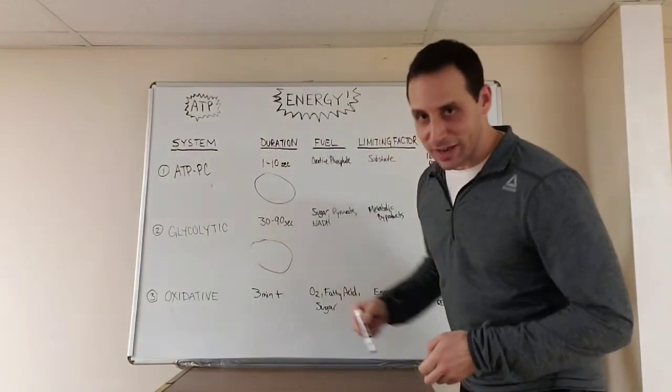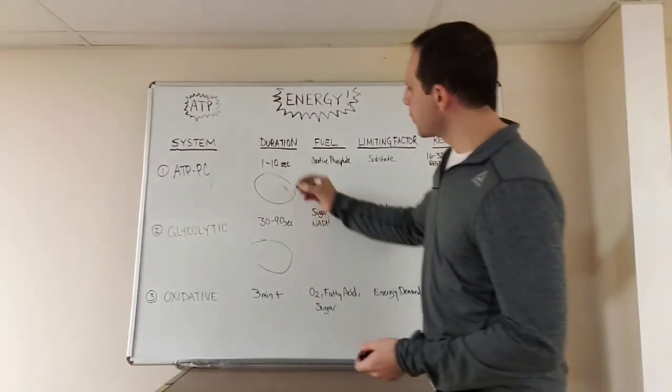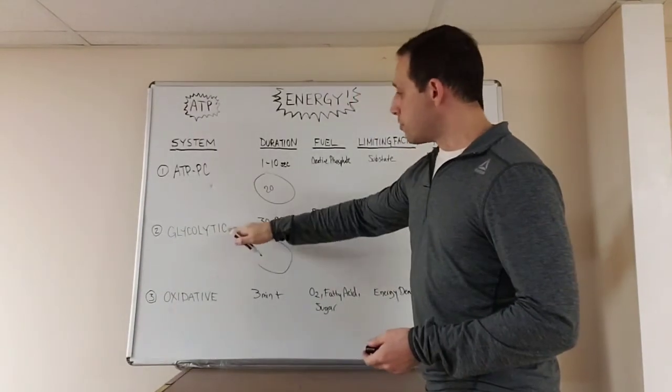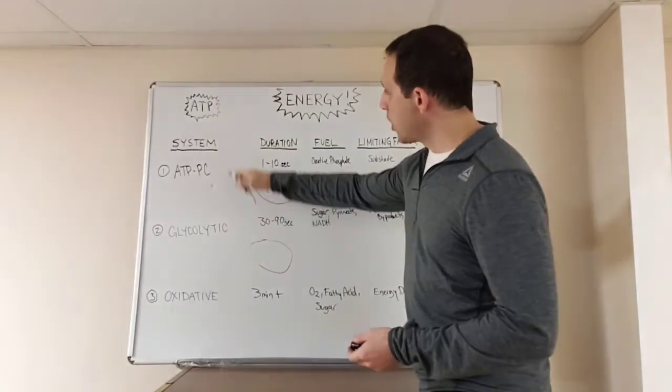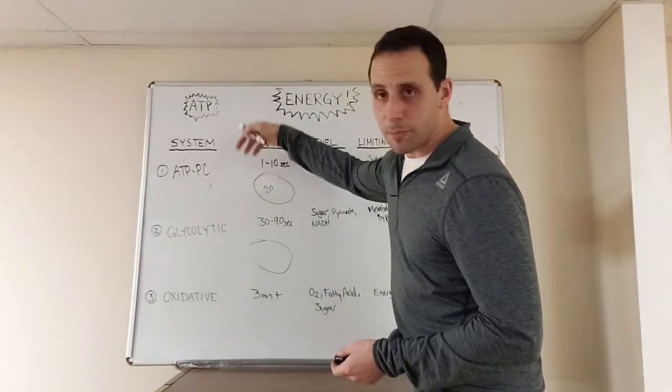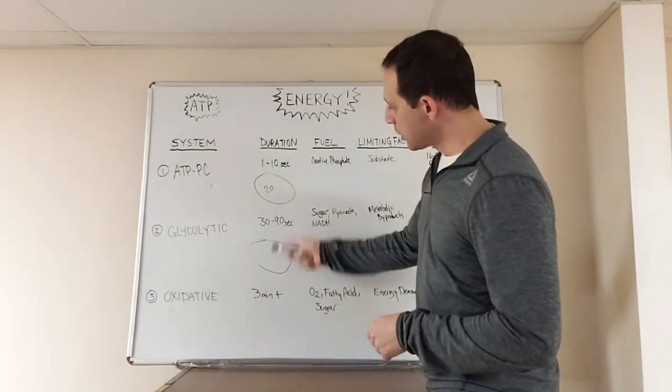So what about 20 seconds? Well, like I said, really all of them are always active. If you're working for like 20 seconds, you're getting power from here and here. Probably mostly from here and the spillover is being absorbed by this system. So this system is dominant. This one's dumping energy in as well at a lower capacity to make up for what's necessary. Likewise here.